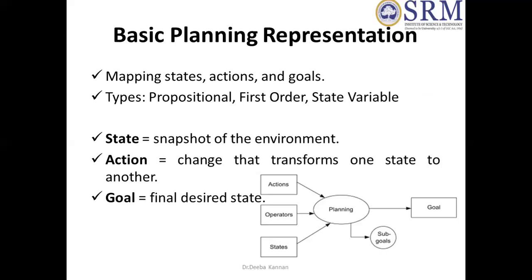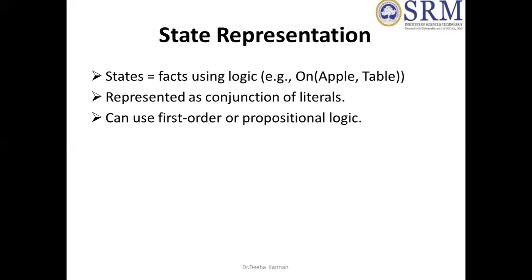We are present in the room, so we can define the state. This is the action graph, which is a particular action. We can pick what we need to do. The final destination is the goal. We can reach the sub-goals and then the final goal. If we use first-order logic, we can represent the state variables. For example, what is the chess board? What are the coins on the chess board? That is the state representation. Here is a first-order logic example: Apple is on the table. We can use logical representation.